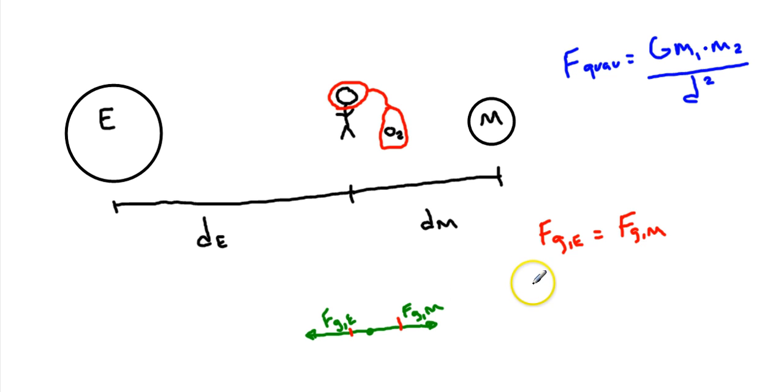We can see the force of gravity from the Earth ends up being the gravitational constant times the mass of Mr. Pakla, me, times the mass of the Earth divided by what I called d_e squared. We are going to set that equal to G times m_me again times mass of the Moon divided by the distance between me and the Moon squared.